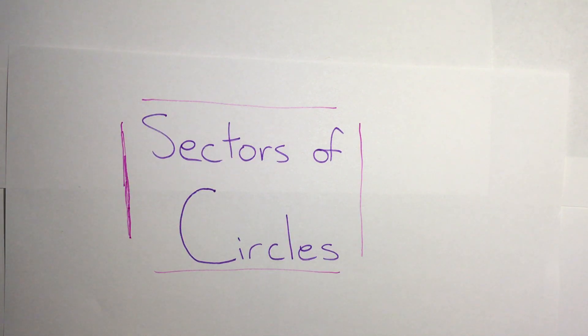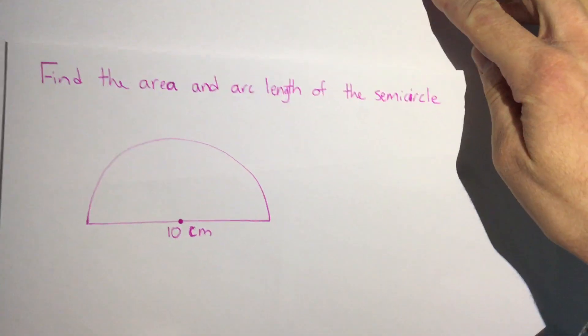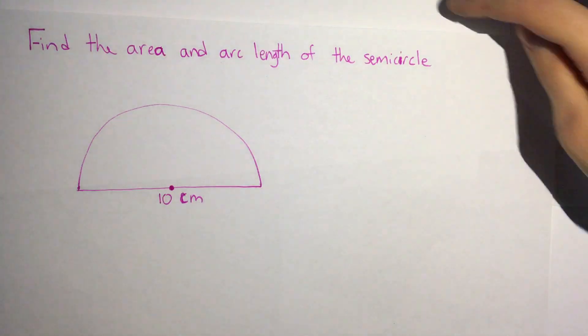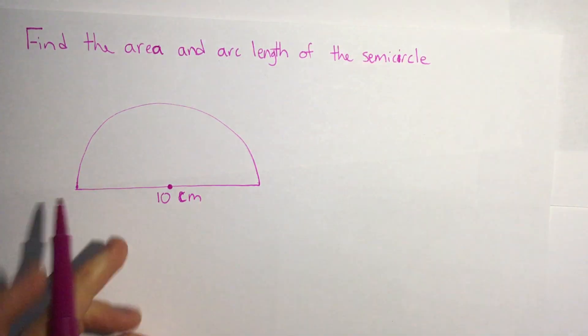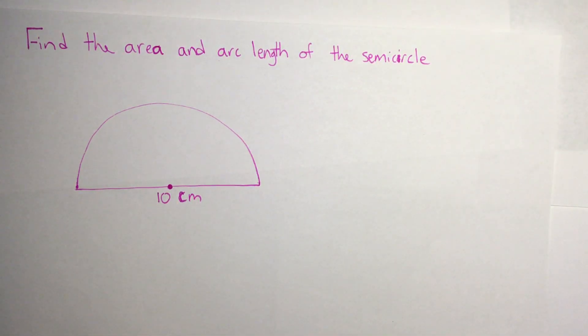So let's take a look at this and we'll start with just an easy section, a semicircle or half of a circle. In this one we have the question it says find the area and arc length of the semicircle and we see the semicircle has a diameter of 10 centimeters.